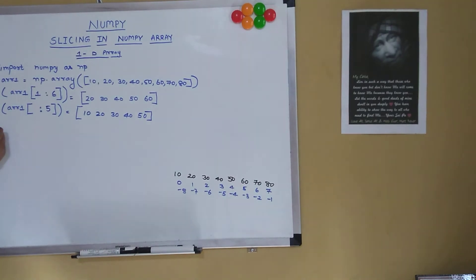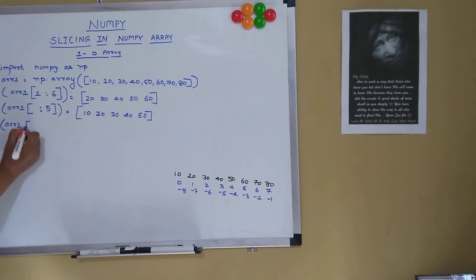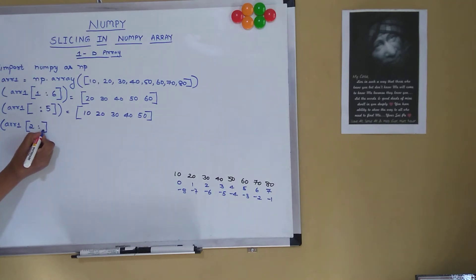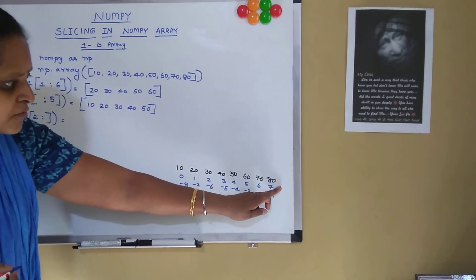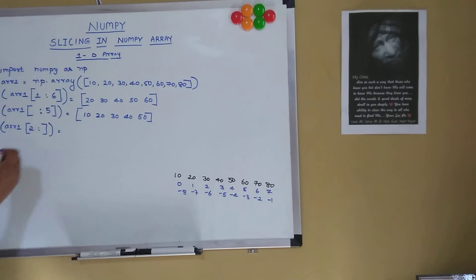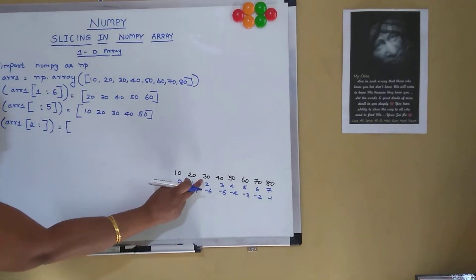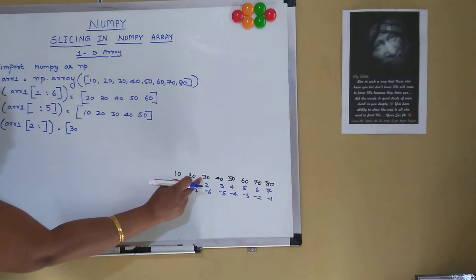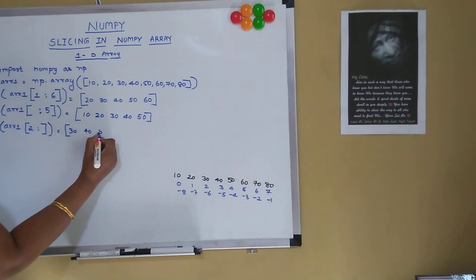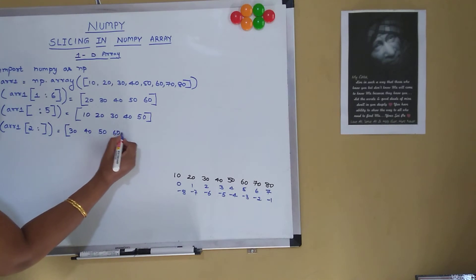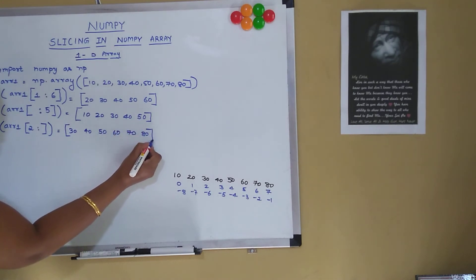Another example: print array1[2:] — specifying start index as 2 but no stop index. When we don't give a stop index, it spans from the given index till the end of the array. So starting at index 2, the value is 30, and it goes all the way to 80, giving us 30, 40, 50, 60, 70, and 80.